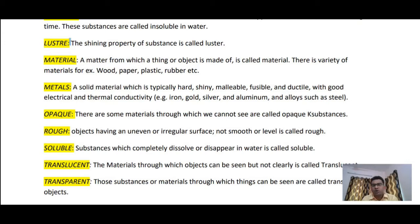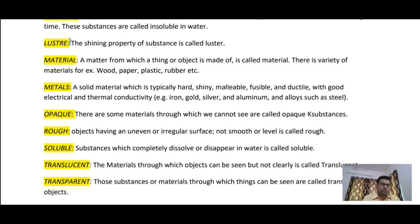The next keyword is 'soluble'. Substances which completely dissolve or disappear in water are called soluble. We check solubility in a solvent such as water. Substances that dissolve in water are soluble — for example, common salt and sugar are soluble. Chalk powder, wood, sand, and soil are insoluble.